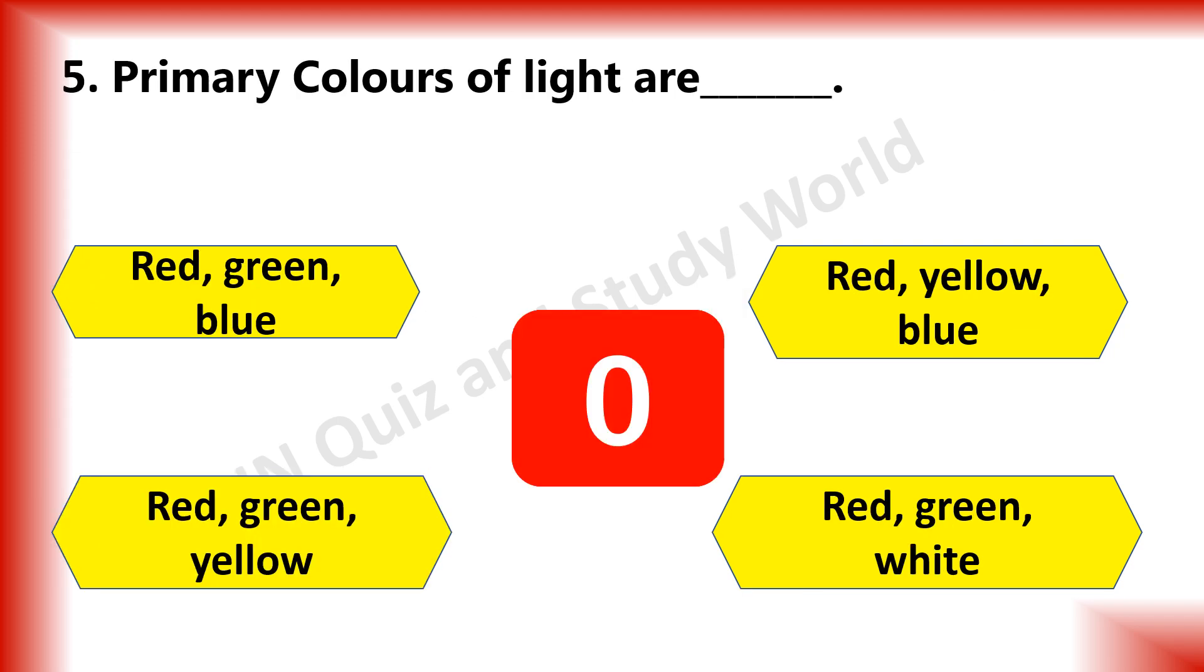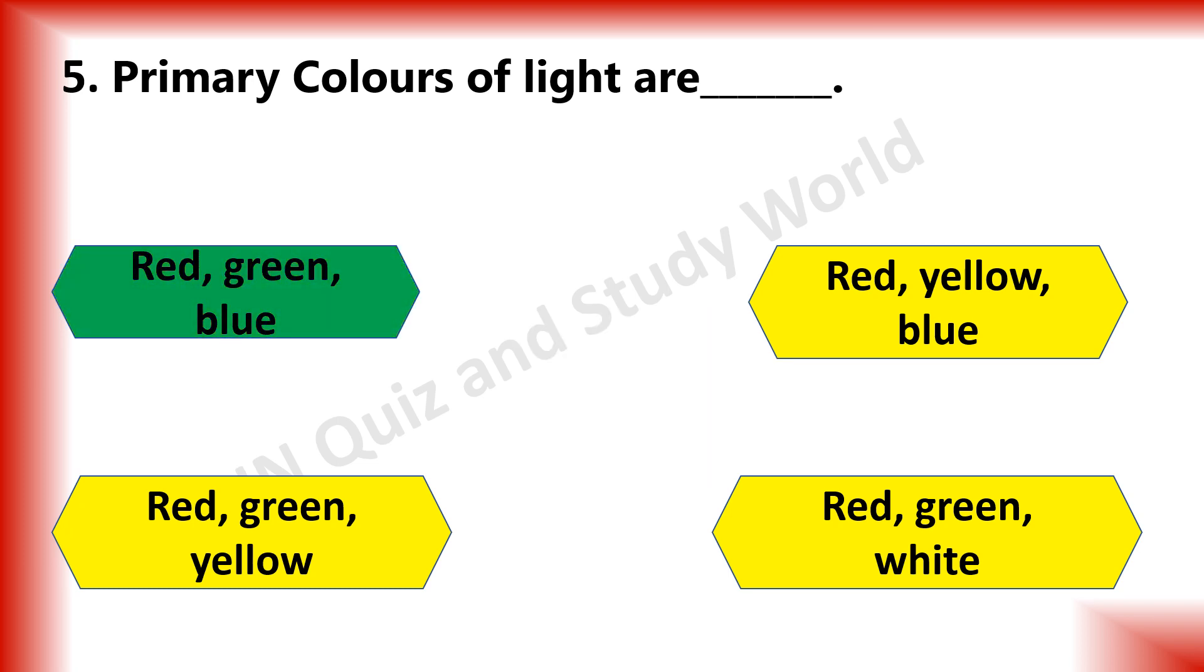The primary colors of light are dash. Is it red, green, blue, red, yellow and blue or red, green, yellow or red, green and white? The answer is red, green and blue.